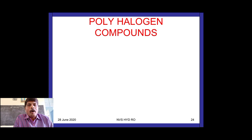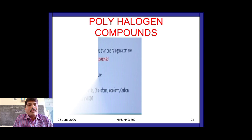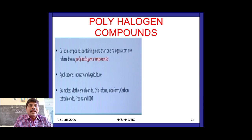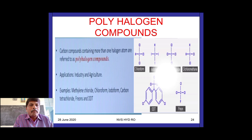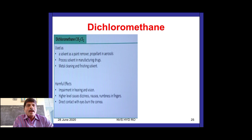Now the last topic of this chapter: polyhalogen compounds. 'Poly' means many — these are carbon compounds containing more than one halogen atom. They have many applications in industry and agriculture. Examples include methylene chloride (dichloromethane), chloroform, iodoform, carbon tetrachloride, Freons, and DDT.